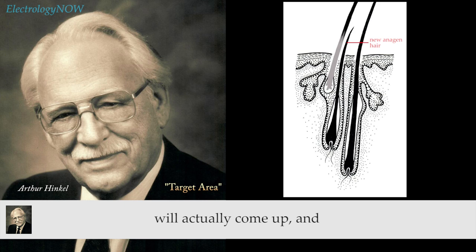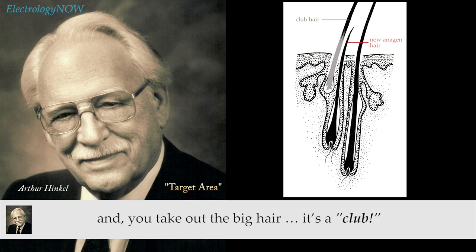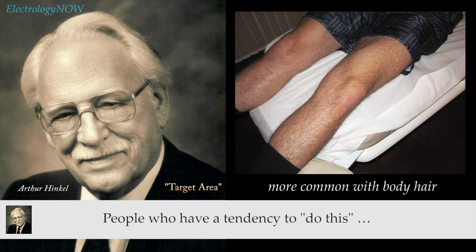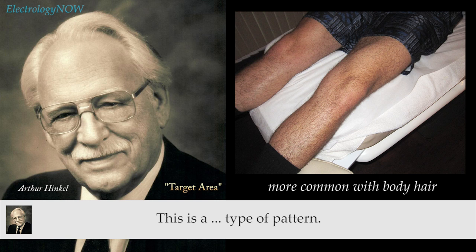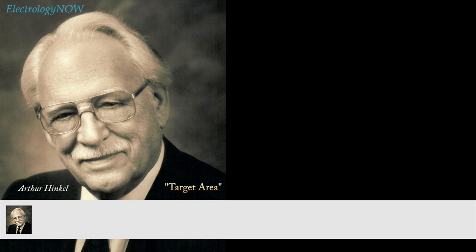Sometimes these hairs will actually come up alongside each other. You'll look at a follicle and see a big, long hair getting colorless towards the skin, and alongside it a little short hair. You put the needle in, take out the big hair — it's a club. Take out the little hair — it has a long root. People who have a tendency toward this, you'll find it more or less consistently. If a person tends to have the old hair staying in longer while the new hair passes it, you might find a lot of this on that person and none on somebody else. It's just an individual characteristic.